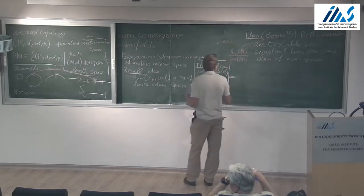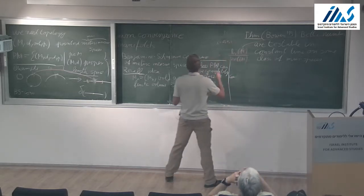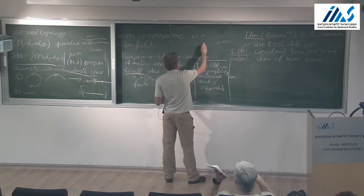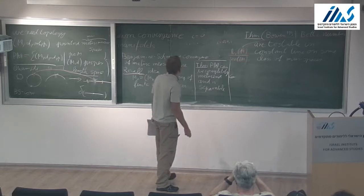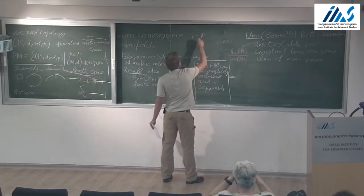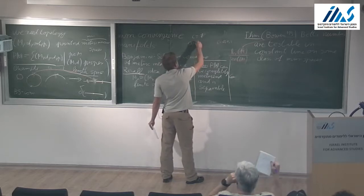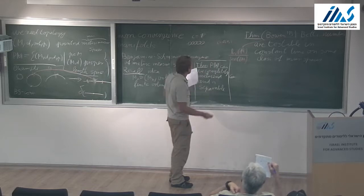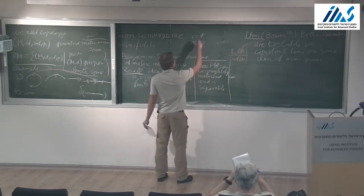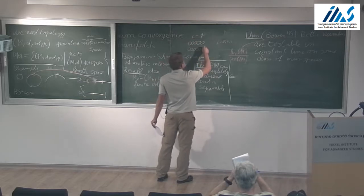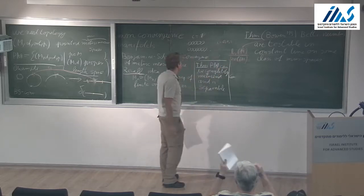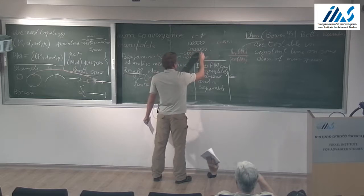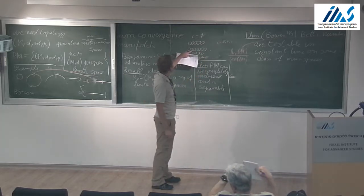Otherwise this convergence would not make sense. You can think about very easy examples. For the first Betti number, you look at many circles and count the number of holes. It somehow makes sense that if you have a sequence of such spaces and add more and more loops, at the end it should be something like loops in both directions, and if you have the uniform measure, you should get the density here.